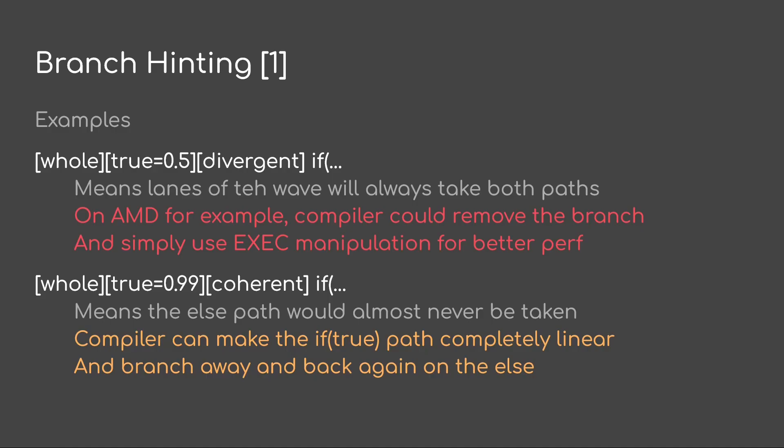Another example: whole, true_equals_0.99, coherent. This means the else path would almost never be taken. A compiler can make the if-true path completely linear and branch away and branch back again on the else.